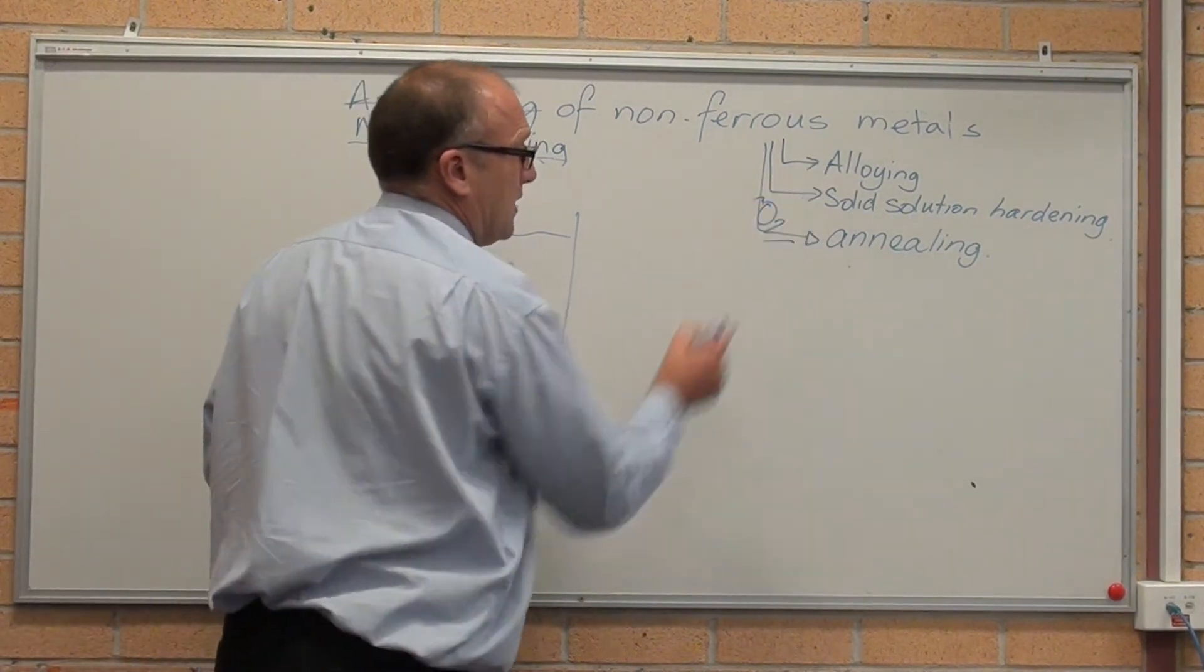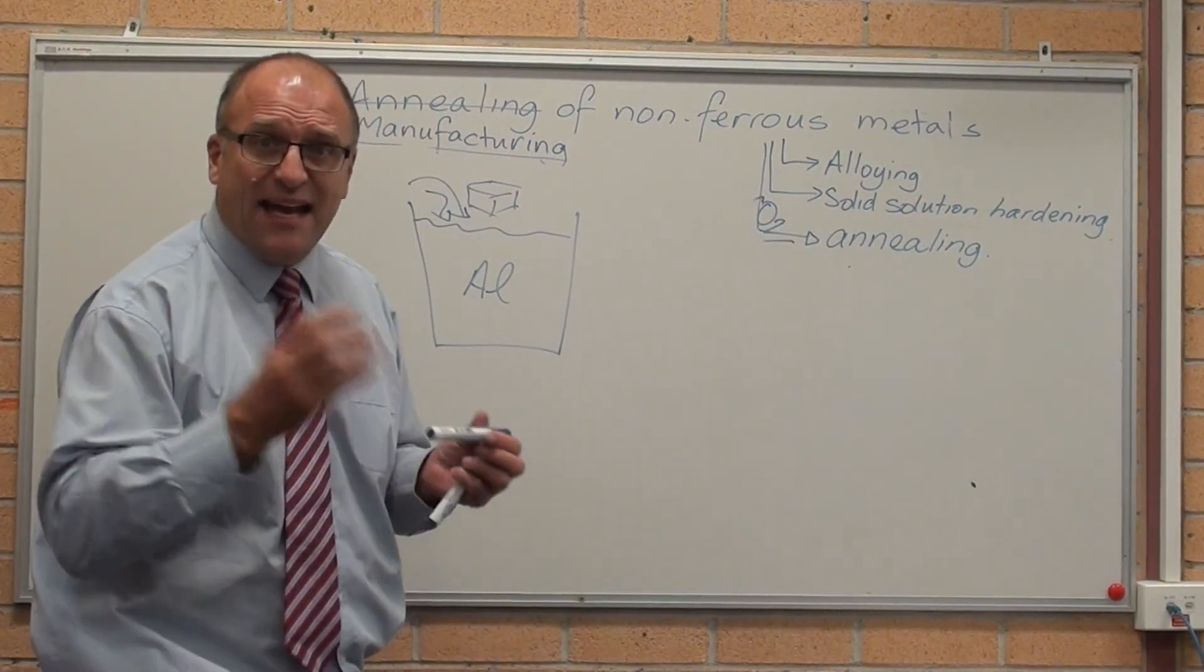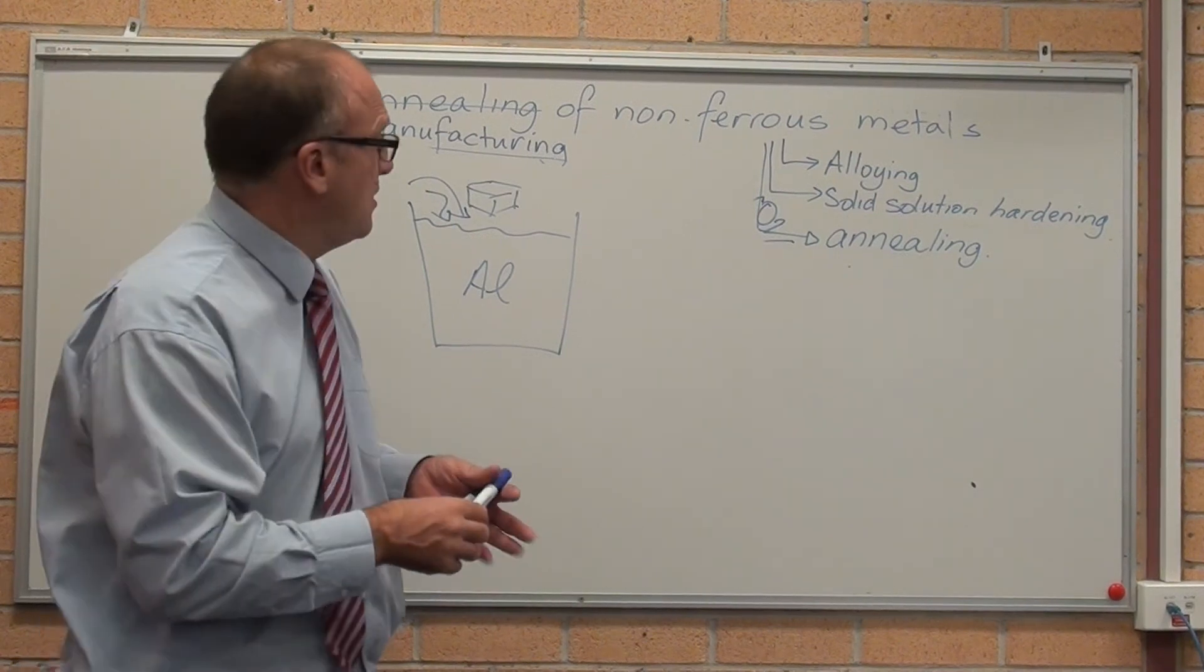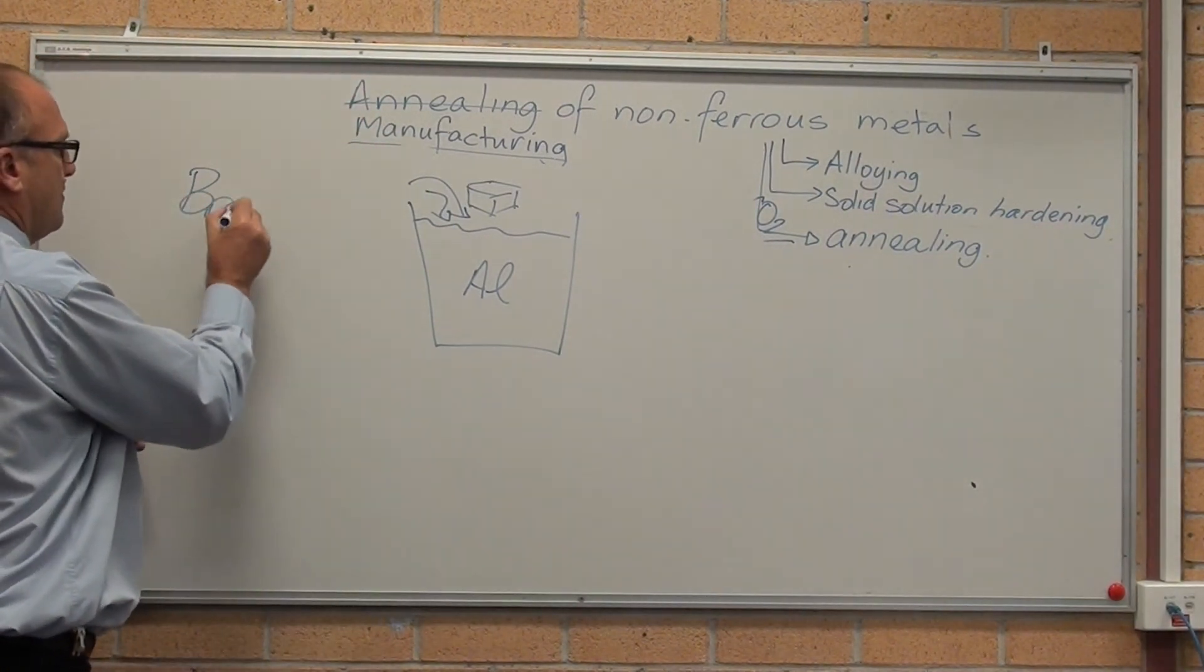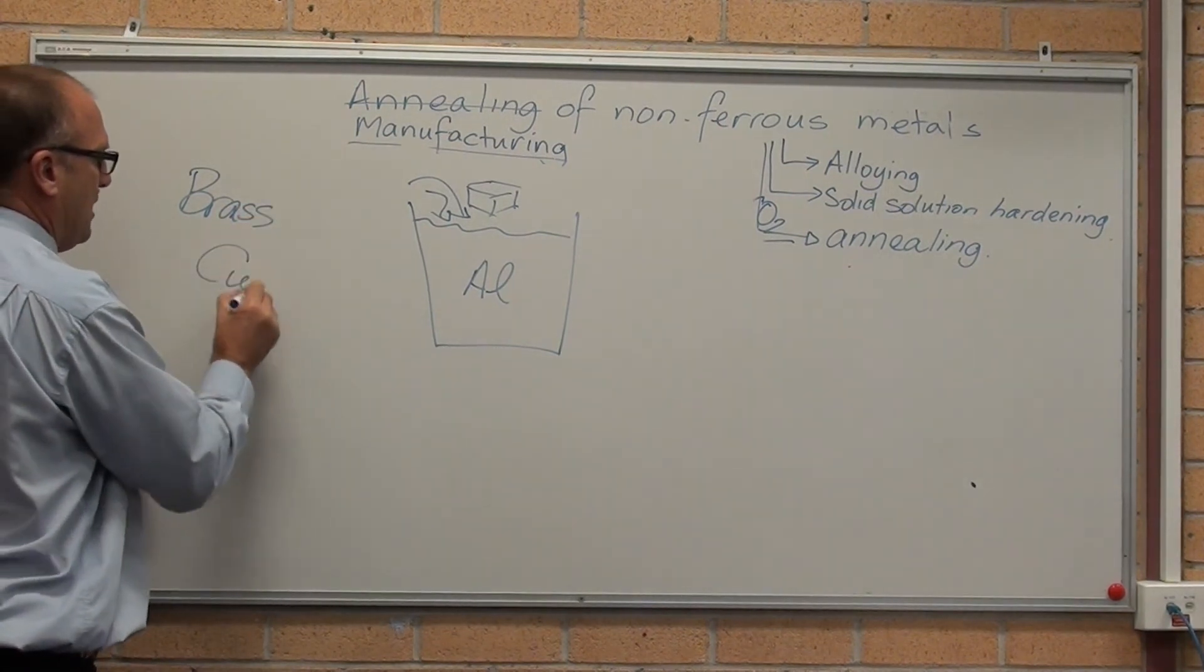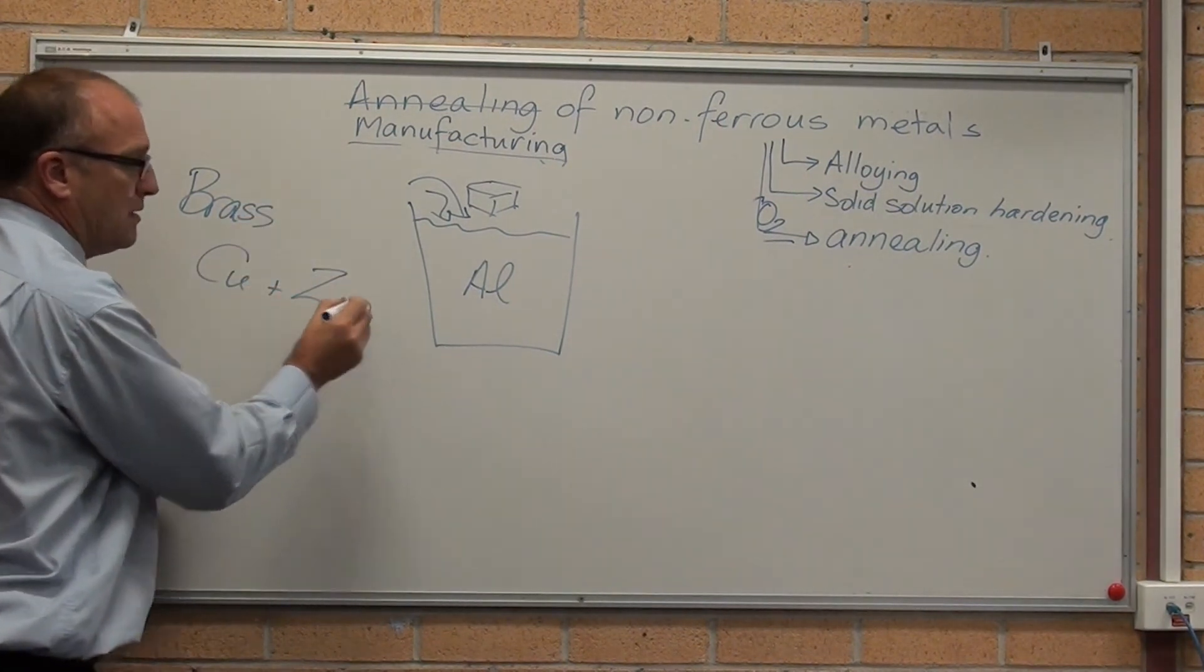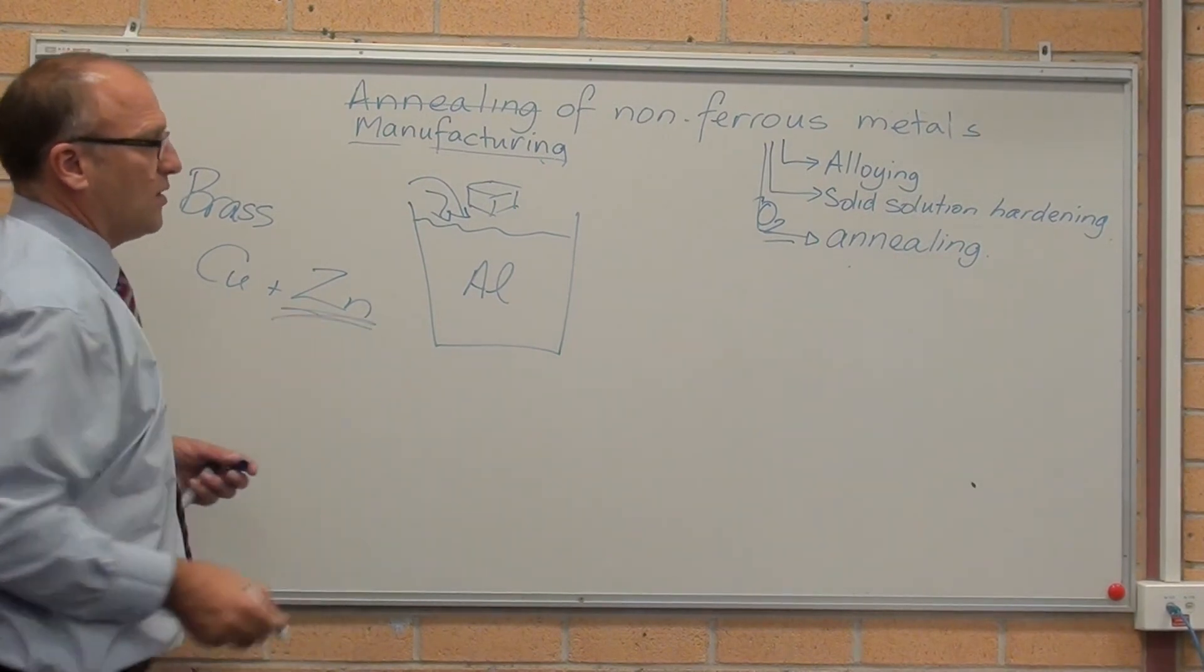So that's what alloying means. Alloying means adding an extra element. It might be in brass - you've got copper, and then you add zinc. Zinc is the alloy.